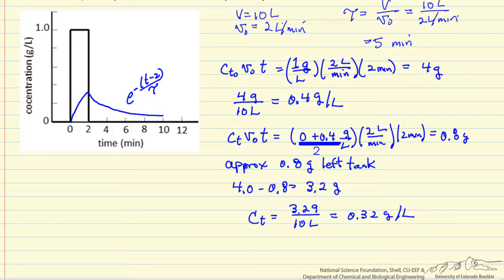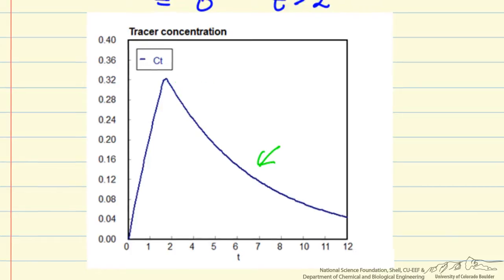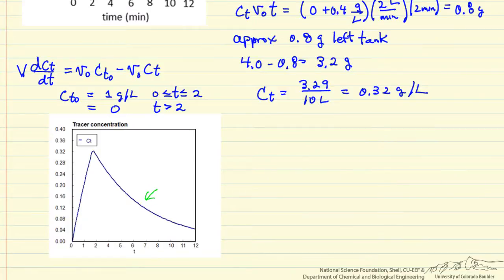Now we could get an accurate value if we were to solve the differential equation. So the differential equation would be V times dCt/dt, the accumulation term, equals volumetric flow rate in times feed concentration minus volumetric flow rate out times the concentration in the tank, where Ct0 is equal to 1 gram per liter for t between 0 and 2 minutes, and it's equal to 0 for t greater than 2 minutes. And so we could solve this differential equation, and when we do, here is the numerical solution. Notice the concentration is just slightly higher than 0.32, and we have the exponential decay here. The y-axis scale is different from this plot, but it has the same shape of increasing to a maximum then an exponential decay.